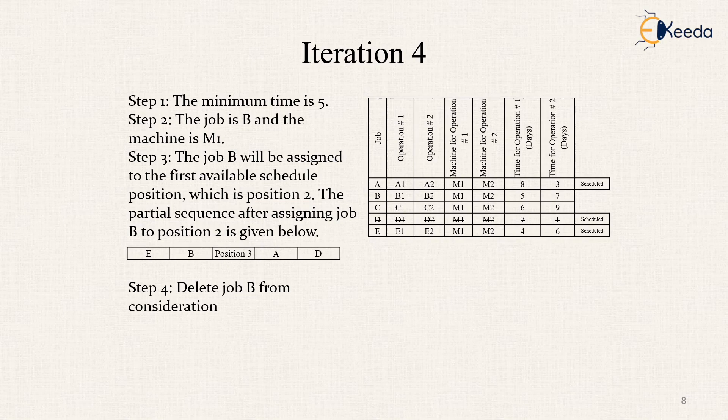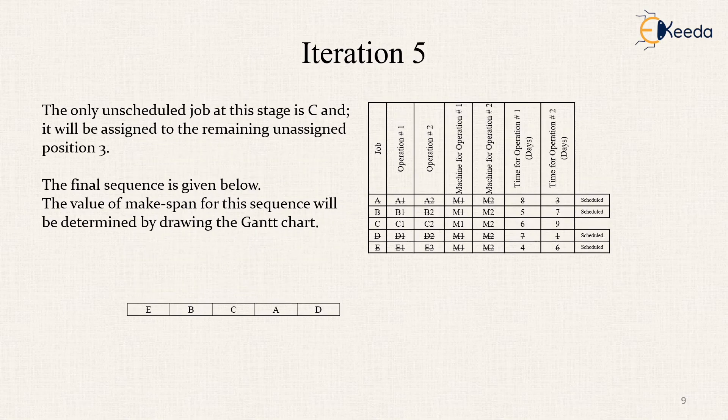Now, when job B is deleted from consideration we get the final iteration, the fifth iteration where the position C or the only unscheduled job at this stage is C which will be assigned to the remaining unassigned position 3. So, the final sequence now is given as E, B, C, A and D. Which makes the make-span for the sequence will be determined by drawing the Gantt chart. Thank you.